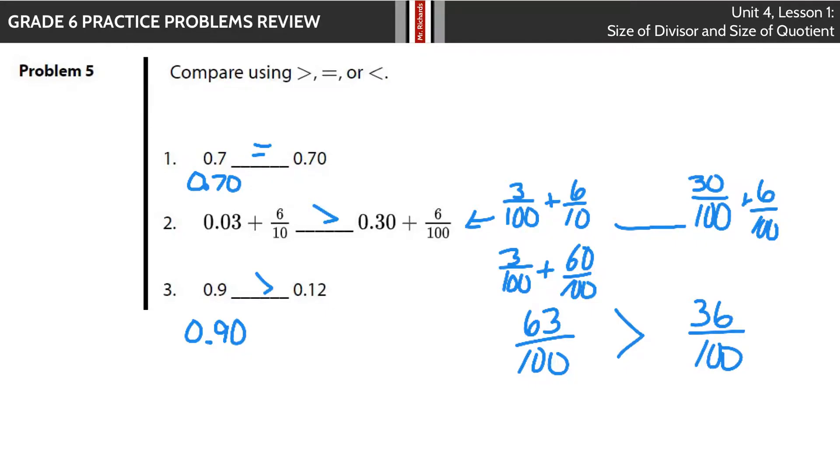Now we're comparing using greater than, equals, or less than. 0.7 and 0.70. This is 7 tenths, this is 70 hundredths. But you actually do have a zero here, so 70 hundredths is equal to 70 hundredths. 7 tenths is equal to 70 hundredths.